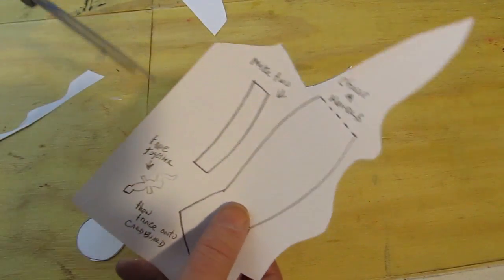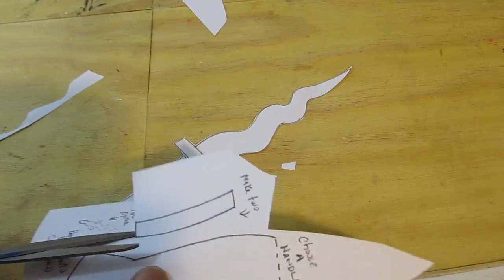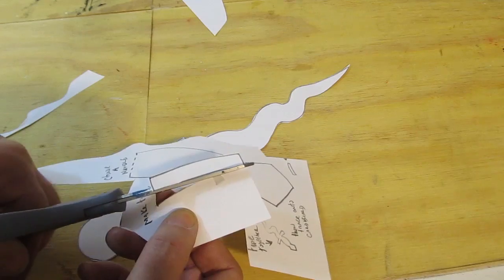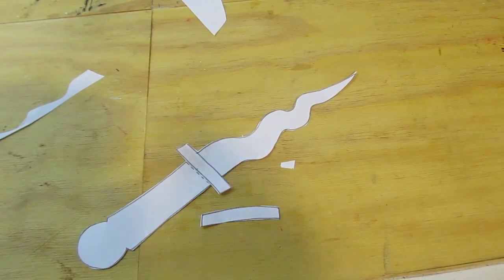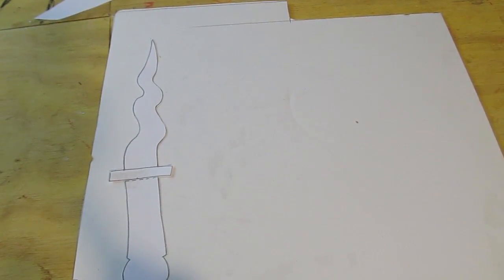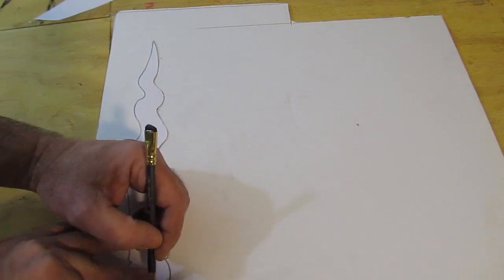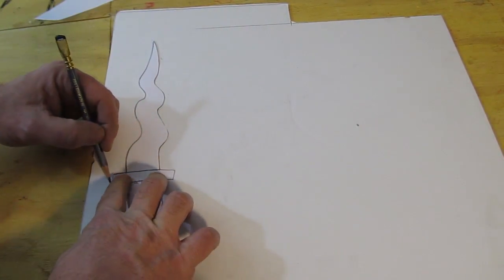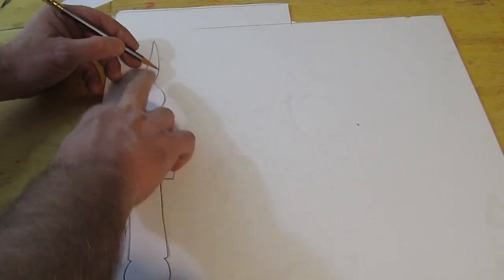And don't forget to cut out that guard piece. You're going to need to make two of those. So lay it out on foam board or cardboard. This project is good with either material. And then trace it. And you make two blade pieces and two guard pieces.